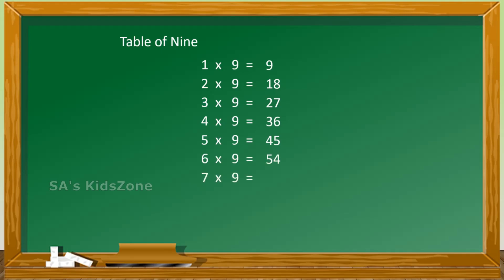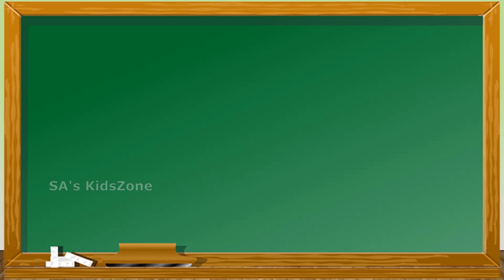7 nines are 63, 8 nines are 72, 9 nines are 81, 10 nines are 90. The next is table of 10.